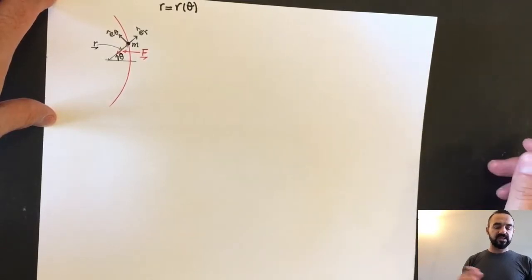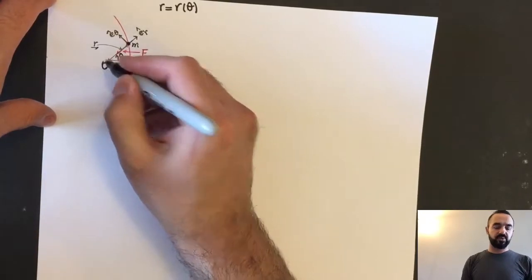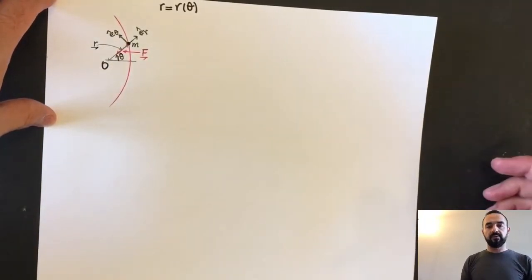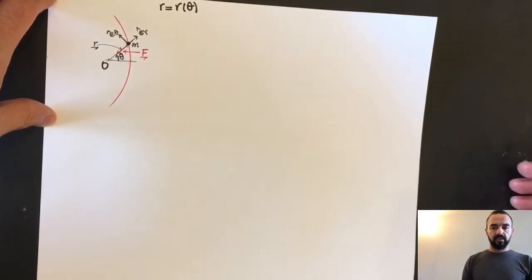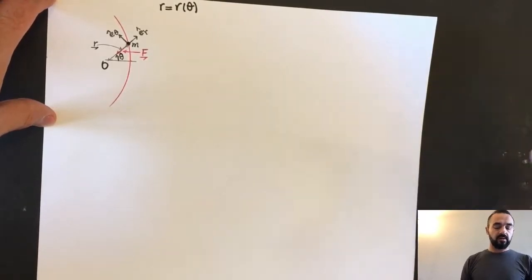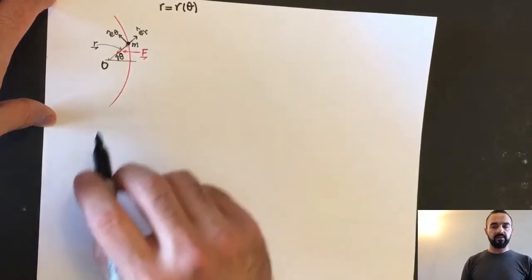In this case, we have gravitational force. The gravitational force always points towards the origin of your reference system. What we can do is start by using a radial-transverse frame, write down an equation of motion, and take it from there.